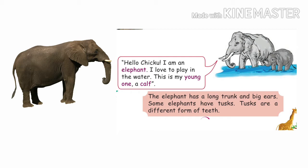The elephant introduces herself to Chikku and shows her baby, which is called a calf. The elephant has a long trunk and big ears. Some elephants have tusks, which are a different form of teeth.